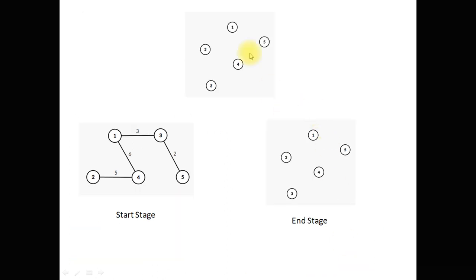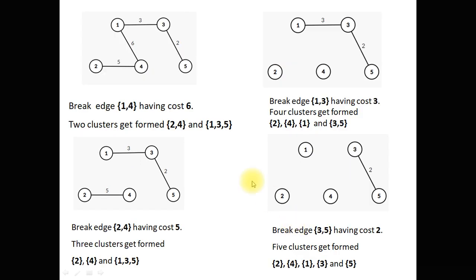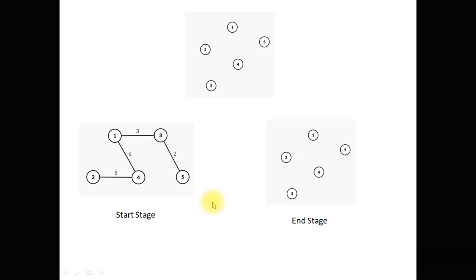So at the end there are 5 points each representing an individual cluster. This is the start stage and end stage. There is no need to go from the start stage to end stage — depending on whenever a sufficient number of clusters gets separated, we can terminate the algorithm.